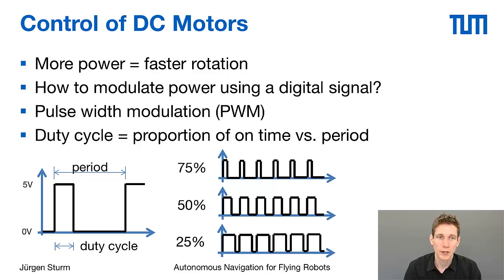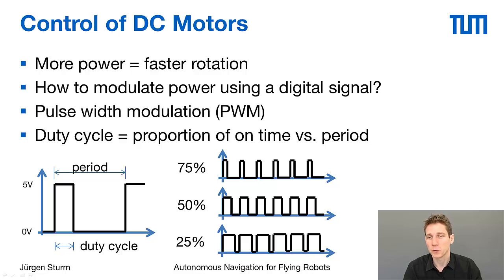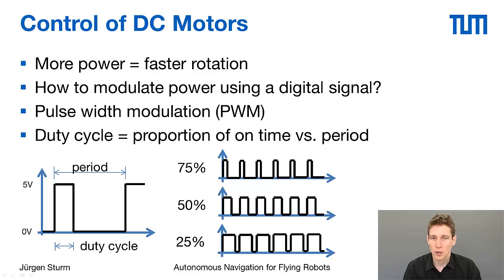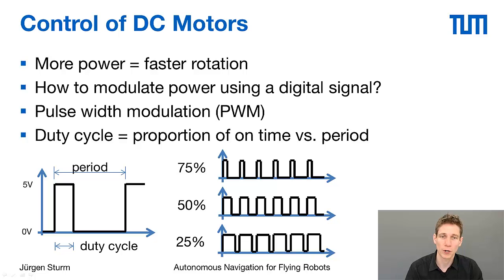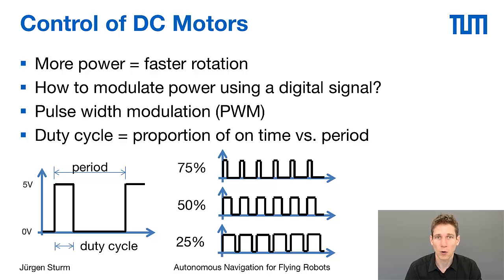The idea is that you have a digital signal that you switch on and off very quickly at a certain frequency. The amount of time that the signal is switched on during this period is called the duty cycle. The larger this duty cycle is with respect to the full period, the more power you actually transmit. If the duty cycle is zero, you do not power the motor at all. If the duty cycle spans the whole period, you would power it at full speed. You can continuously and smoothly change this duty cycle to regulate the speed or output power for the motor.